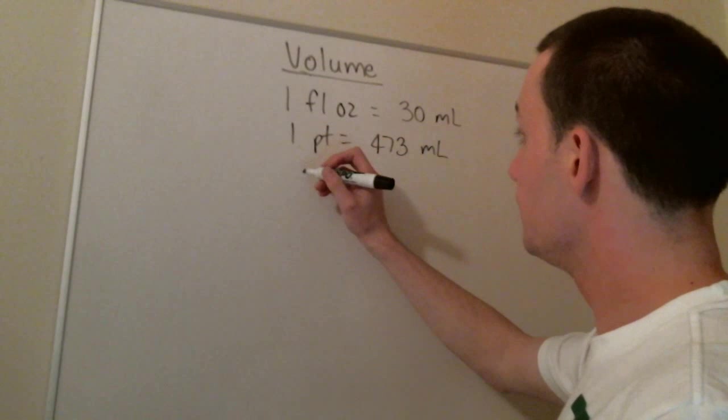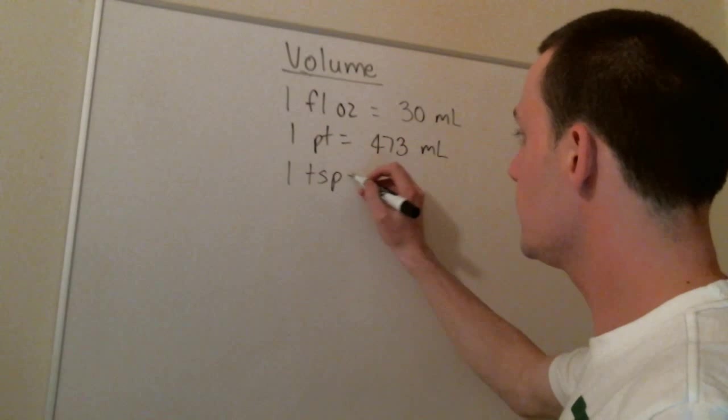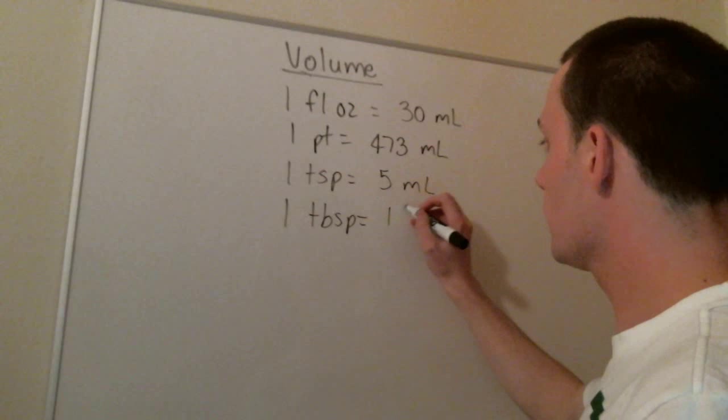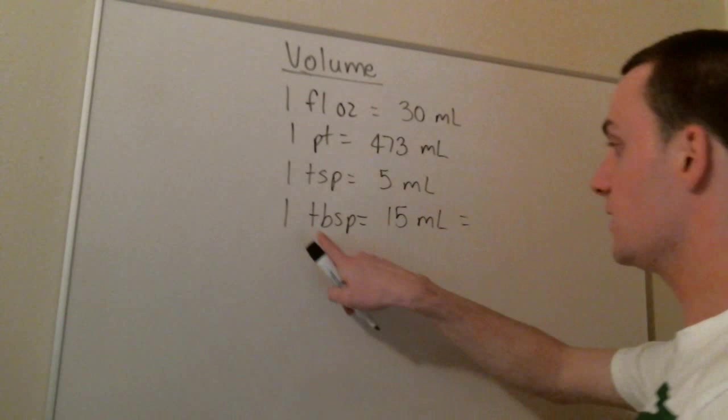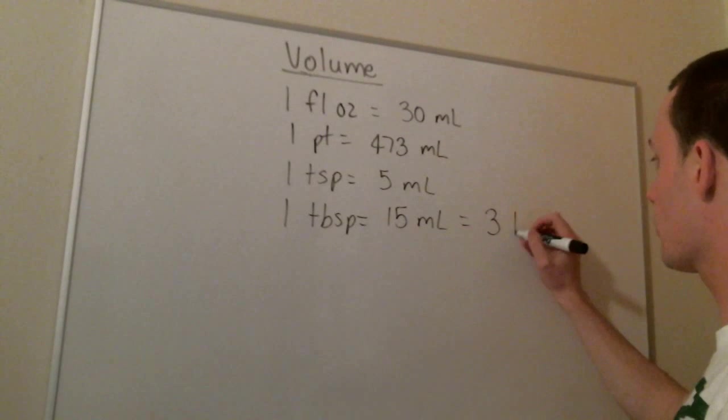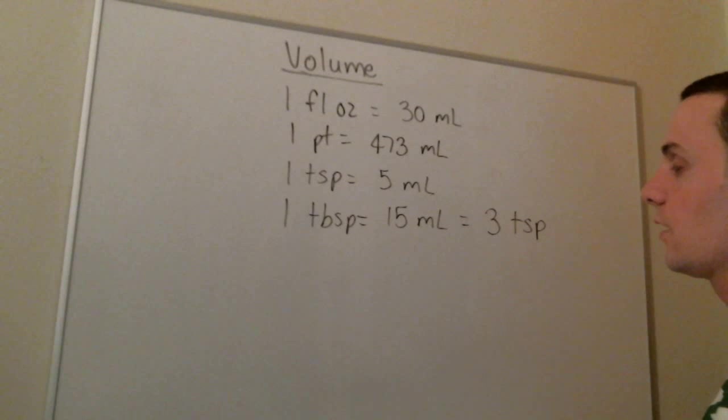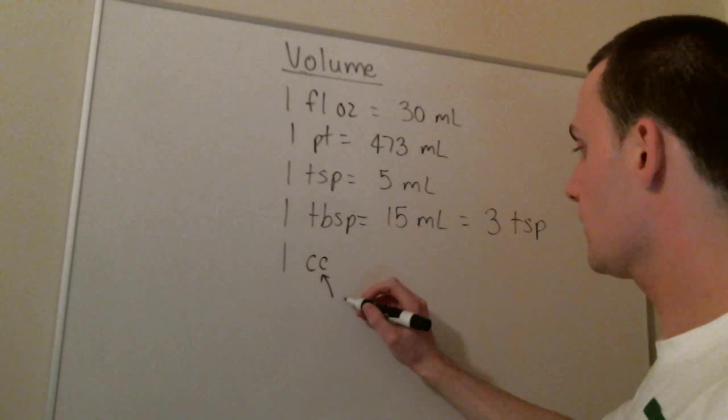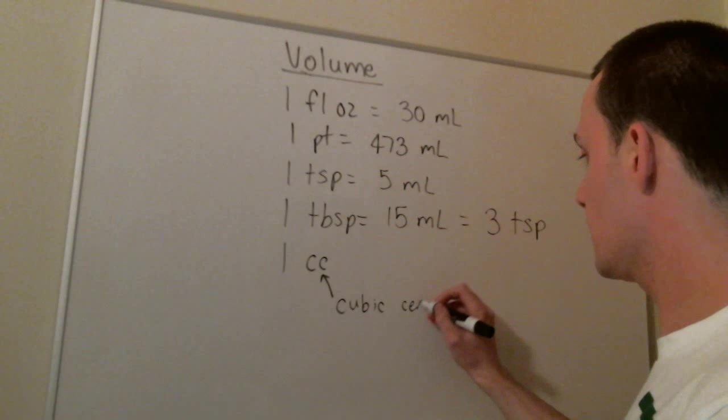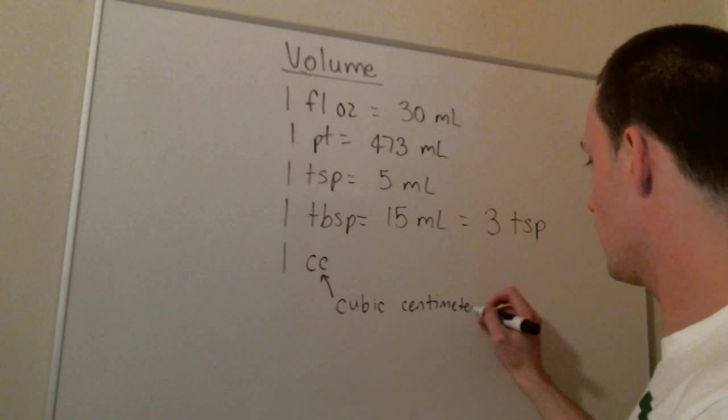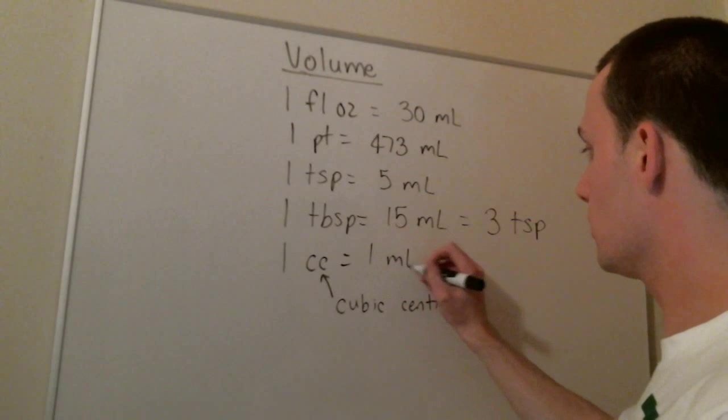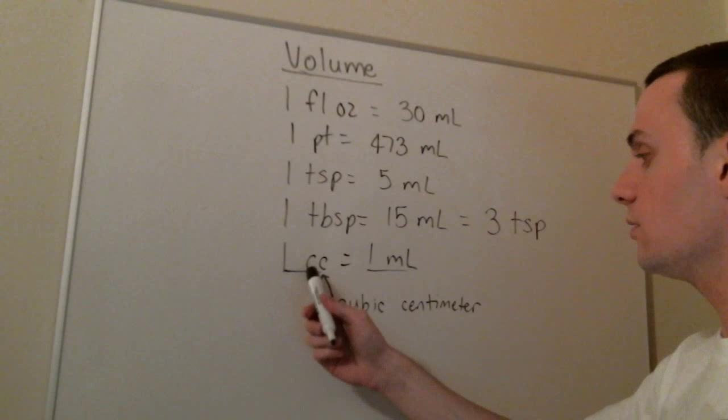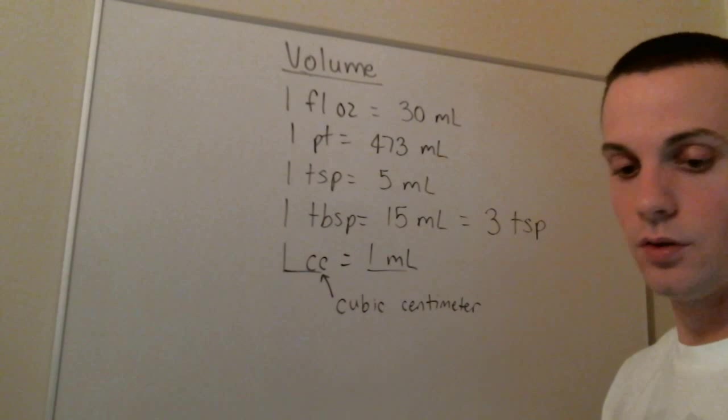We also use teaspoons and tablespoons. So a teaspoon is equal to 5 milliliters. And a tablespoon is equal to 15 milliliters, because one tablespoon is actually equal to three teaspoons. We also use something called a CC. And a CC is a cubic centimeter. One cubic centimeter is one ml. And it's important to know that one CC is the same thing as one milliliter.